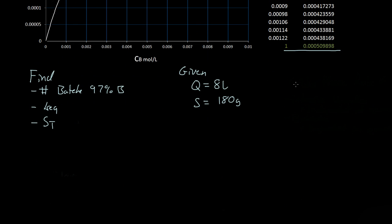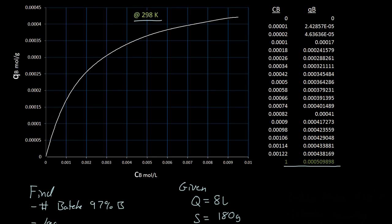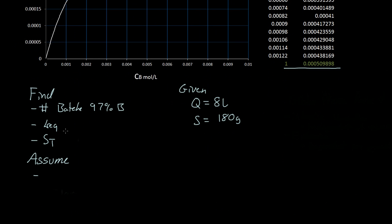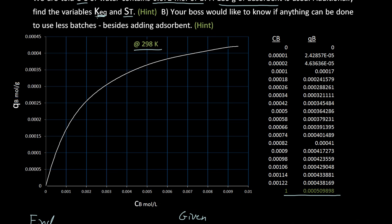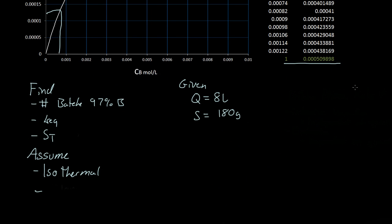We can now make some assumptions. We assume it is isothermal because we are only given the equilibrium information at 298 Kelvin. Next, we need to assume whether it is a linear isotherm or a Langmuir isotherm, since those are the only two equations where you can find KEQ and ST. Looking at the graph, it is linear up to a point and then starts to flatten out, so it is safe to assume it is a Langmuir isotherm.